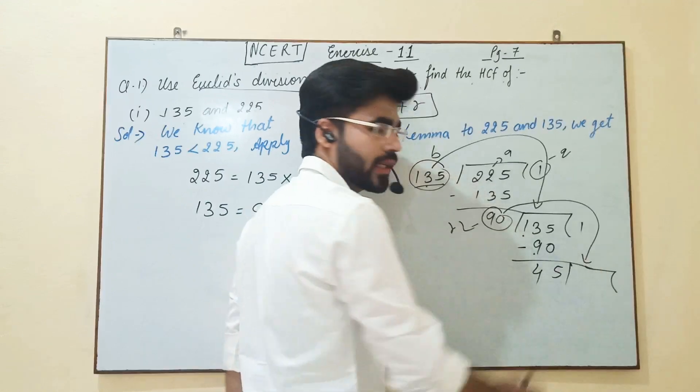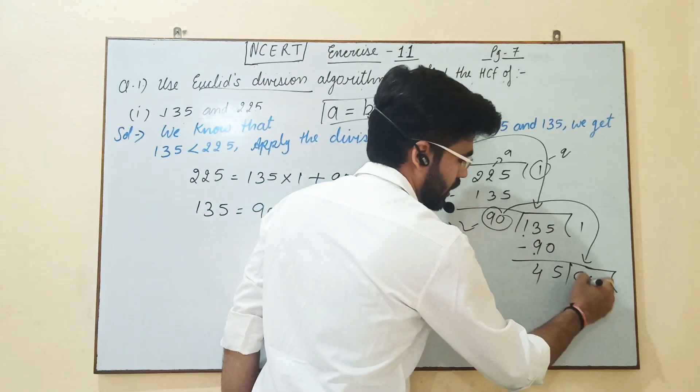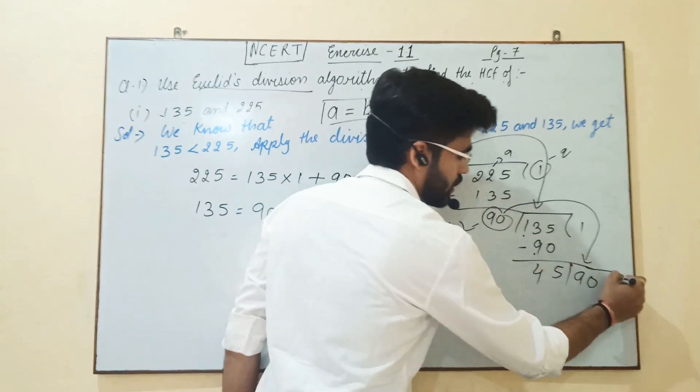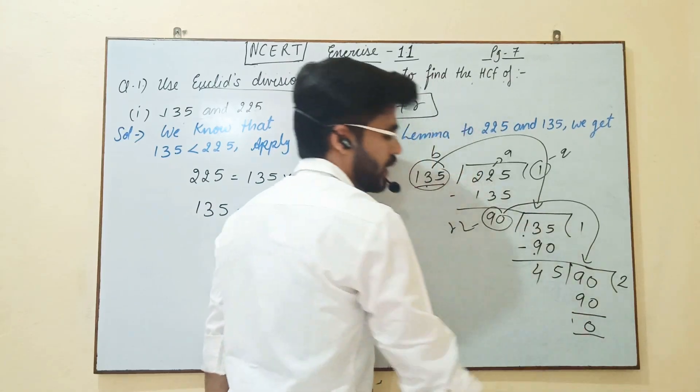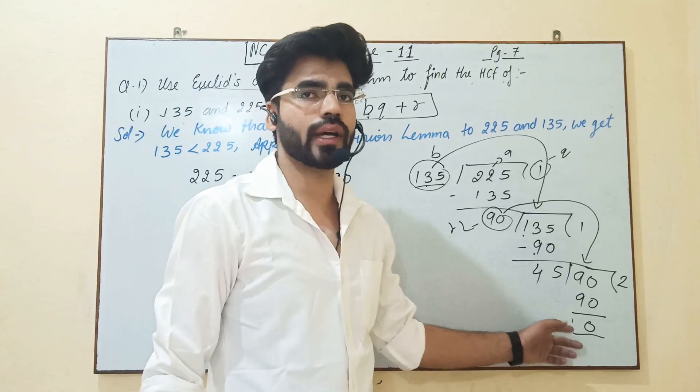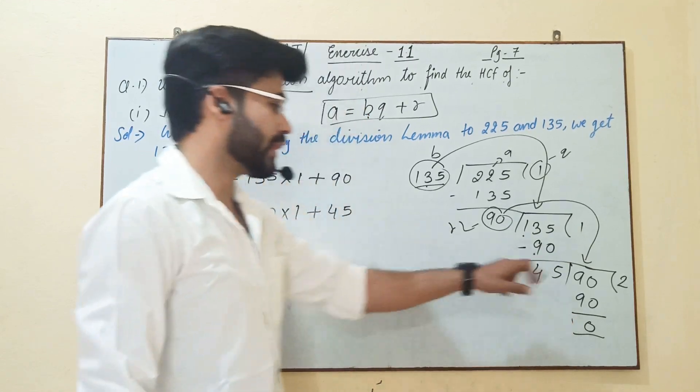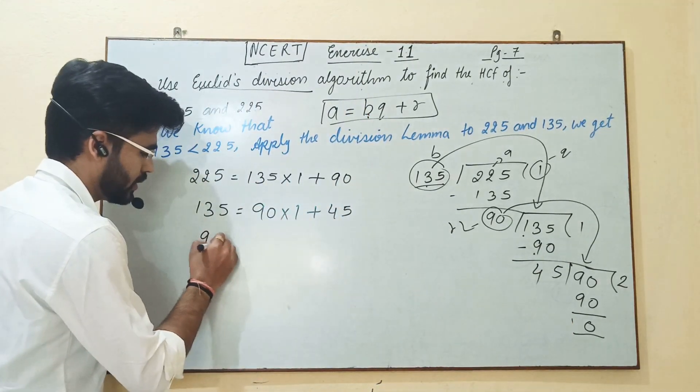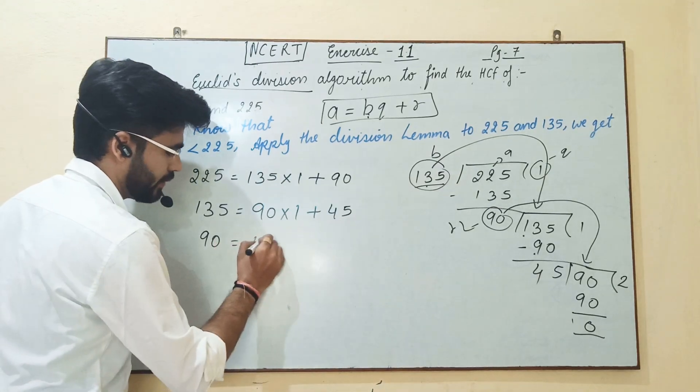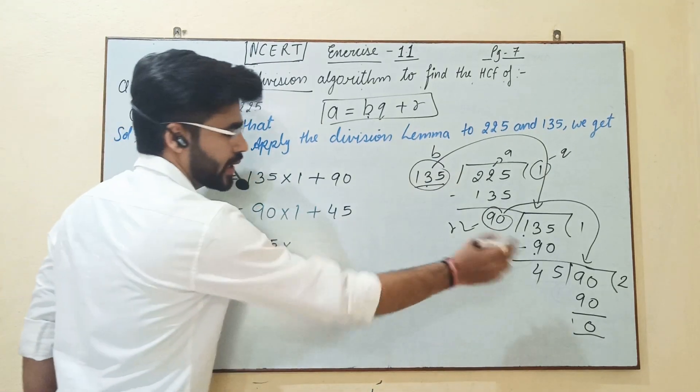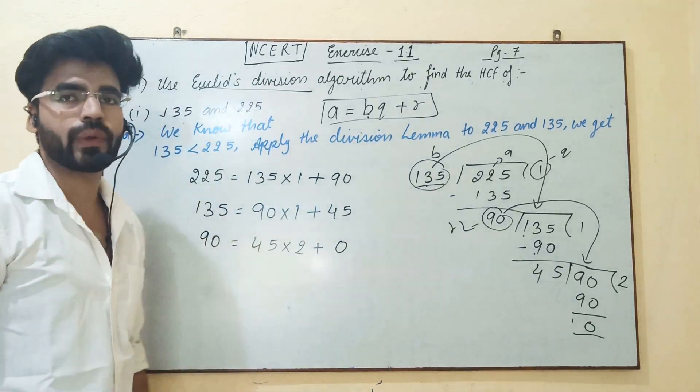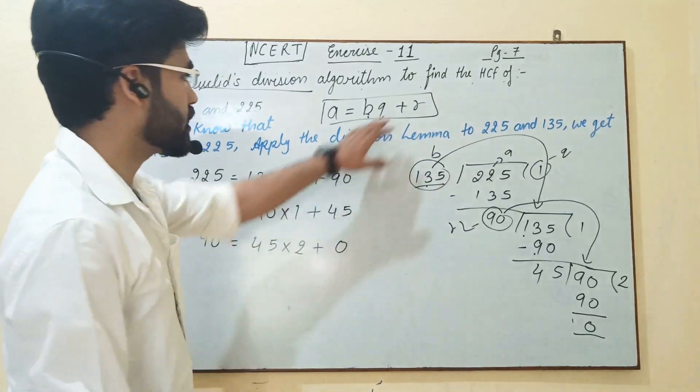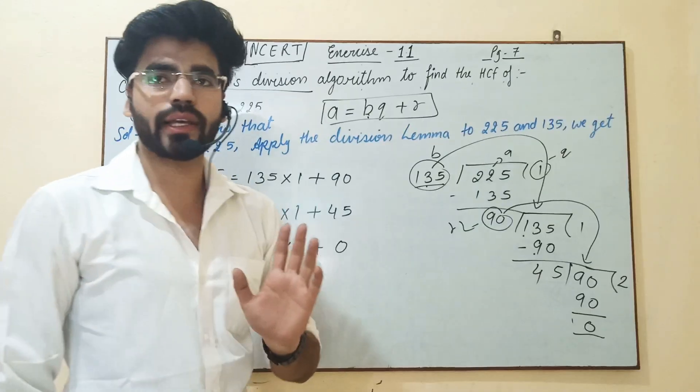Now 90, we have to write 45 to 90. We have to write, now 90 equals 45 and the quotient is 2 and the remainder is 0. So now we have to find the HCF. The HCF is 45.